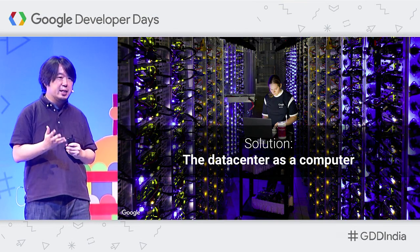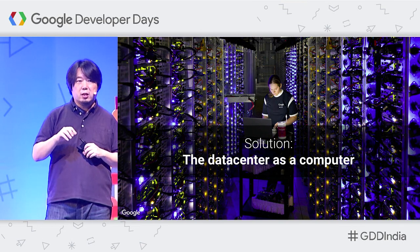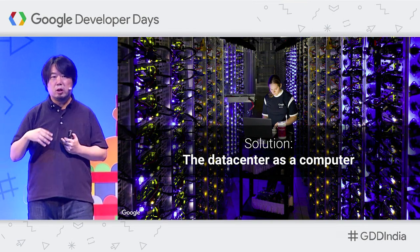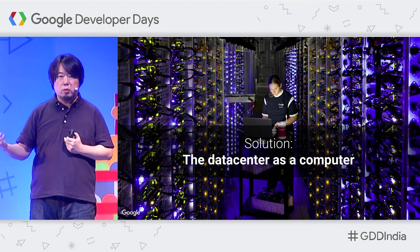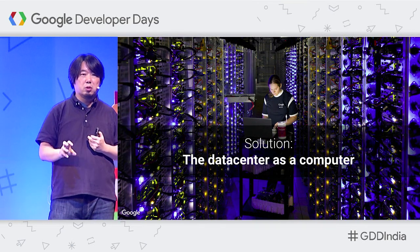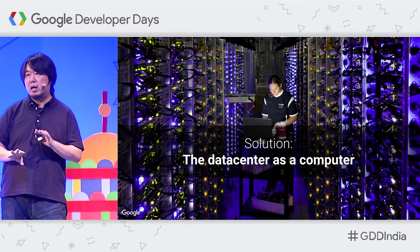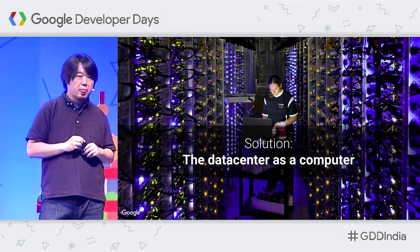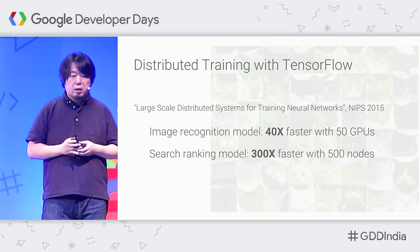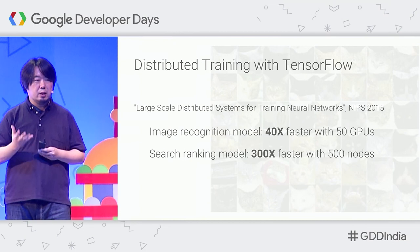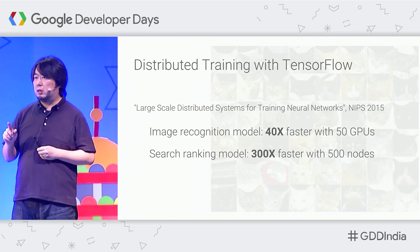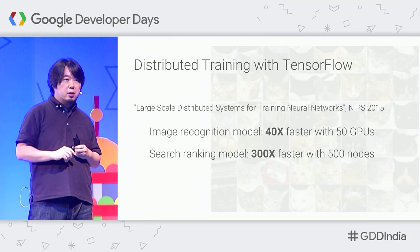That's the reason we provide Google Cloud as a solution for data scientists and machine learning users. We call our data center a computer — it's not just a bunch of machines in a building. It's a massively powerful computer where you can use networks and middlewares. Any software engineer at Google can run their applications on hundreds of machines with just one container command.